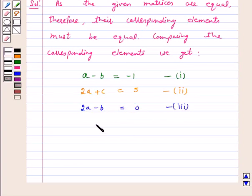And again, 3C plus D is equal to 13. Let us take it as equation 4.